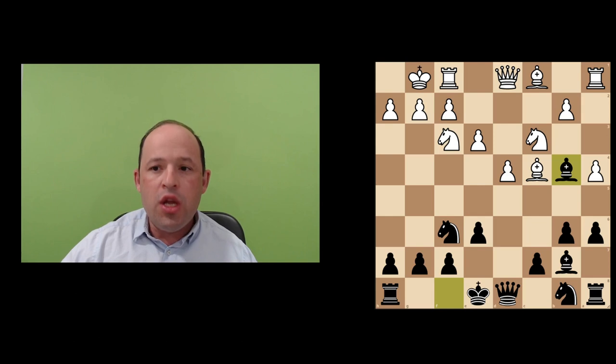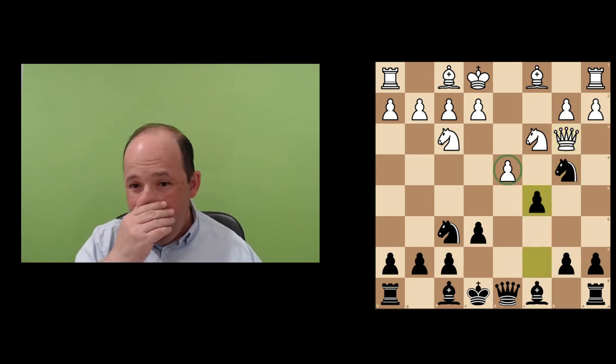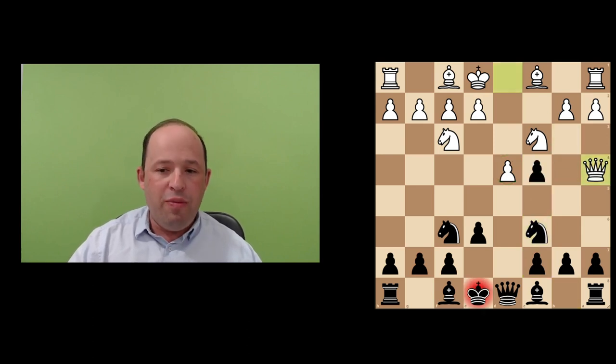So we talked about move e3. Now I would like to mention also Queen a4 check. This one is not dangerous at all. We play Knight c6, and with the point that after Queen c4, we have a very nice jump with tempo, Knight e4, threatening Knight c7. After Queen b3, we get c5—all is covered. Black easily solves his opening problems.